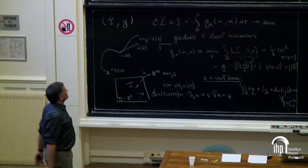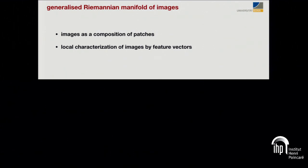We can consider images as composition of patches, describing textures. Or we can locally characterize images by feature vectors. The first approach is more a synthesis approach, so really we describe how we build up images. The second is more an analysis approach, where we treat the local feature description of an image.